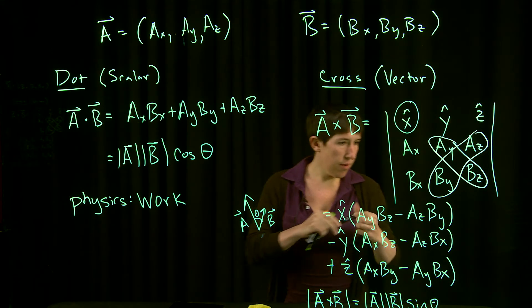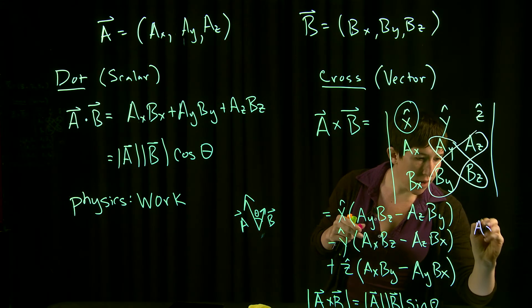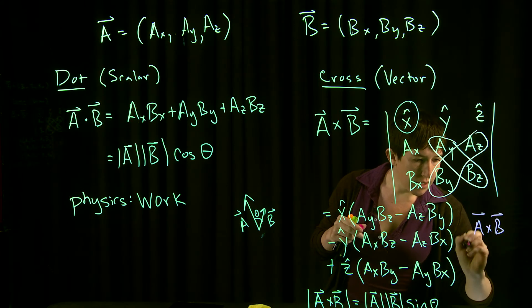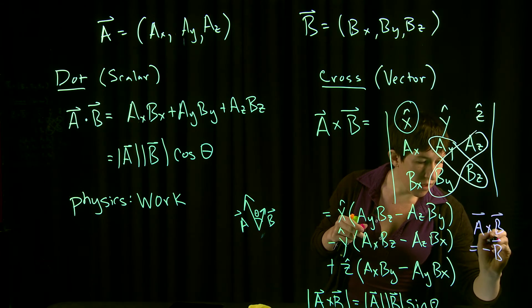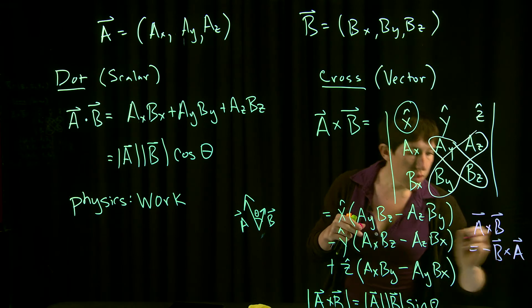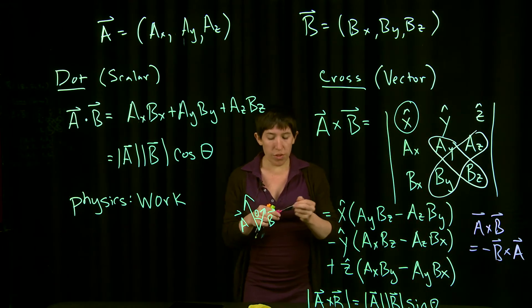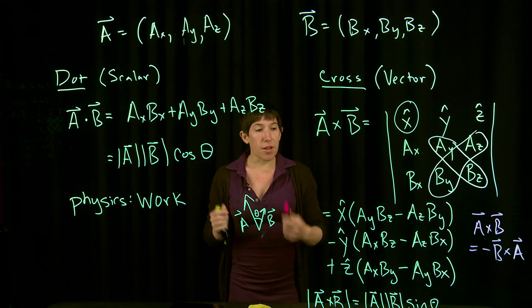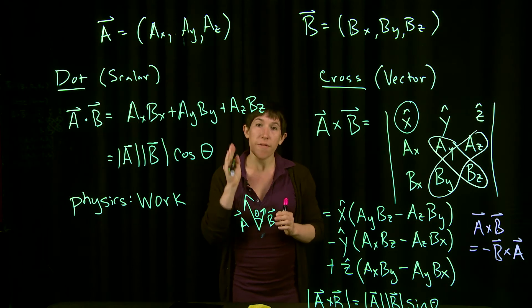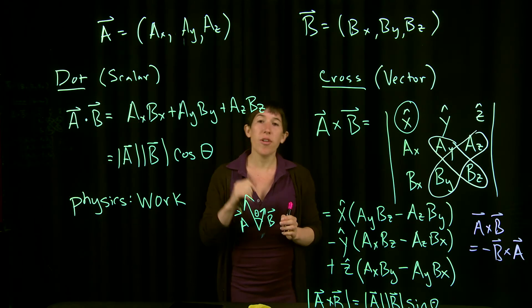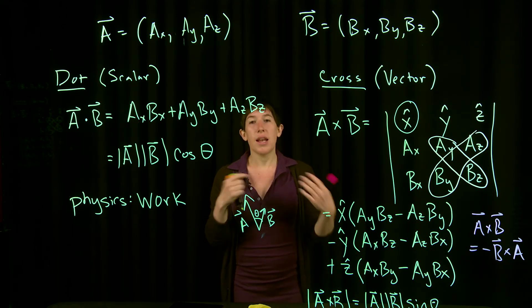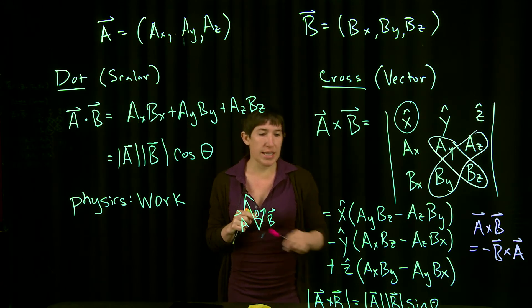When you're doing the right-hand rule, you always want to remember that you start by putting your fingers along the first vector and then curl them towards the second vector, not the other way around, because then you'll make a sign error.